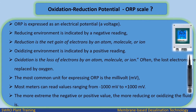ORP is expressed as an electrical potential, a voltage. A reducing environment is indicated by a negative reading. Reduction is the net gain of electrons by an atom, molecule, or ion. An oxidizing environment is indicated by a positive reading. Oxidation is the loss of electrons by an atom, molecule, or ion.